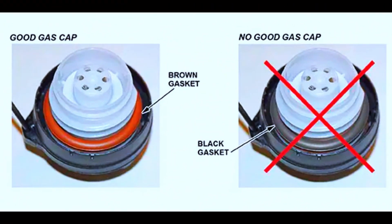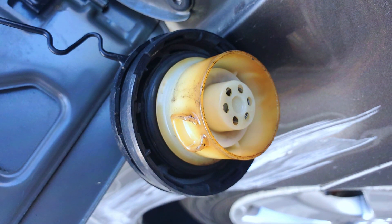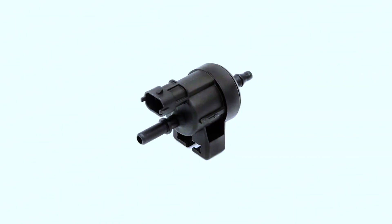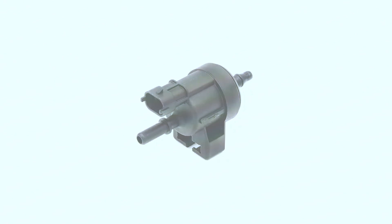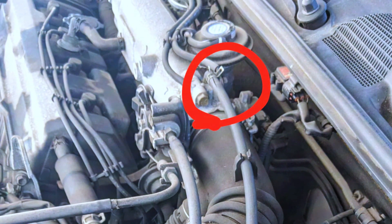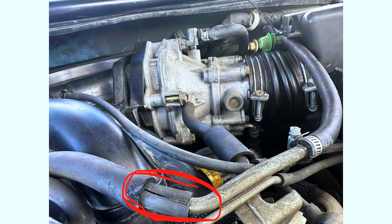The most common cause is a loose or faulty gas cap. The gas cap creates a seal to prevent vapors from escaping, and a loose or damaged cap can throw the code. A faulty purge valve can also malfunction and get stuck open or closed. Additionally, wiring or vacuum line issues — electrical problems with the purge valve wiring or leaks in the vacuum lines — can also cause the code.